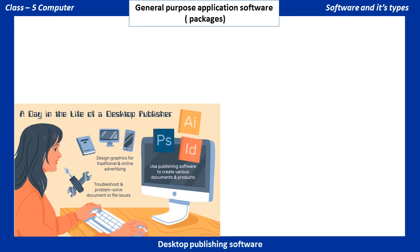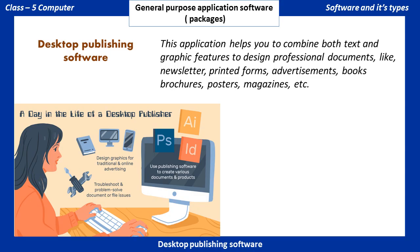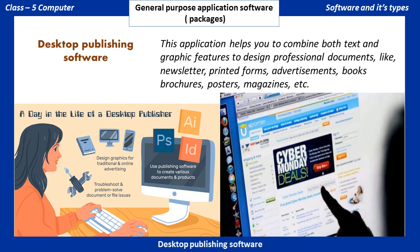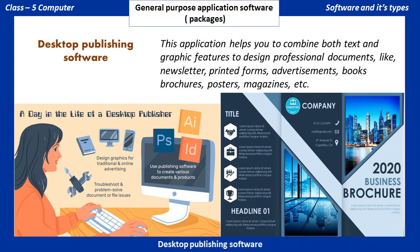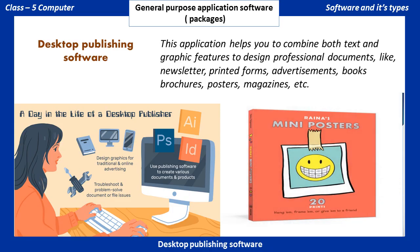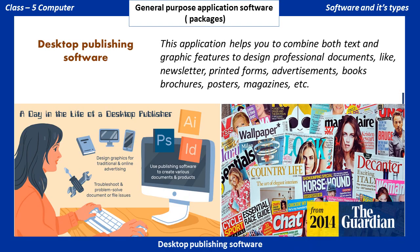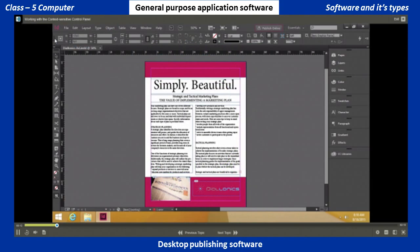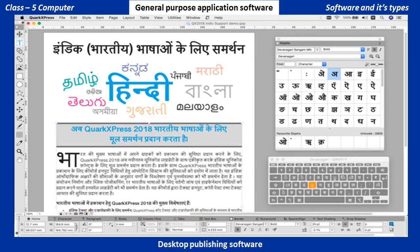Desktop Publishing Software: This application helps you to combine both text and graphic features to design professional documents, like newsletters, printed forms, advertisements, books, brochures, posters, and magazines. Examples include CorelDRAW, Adobe InDesign, and QuarkXpress.